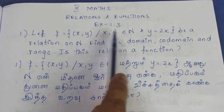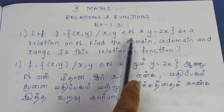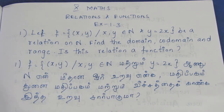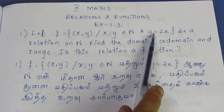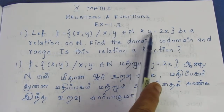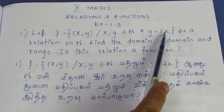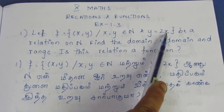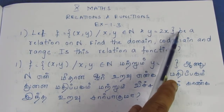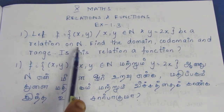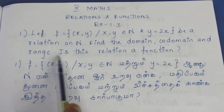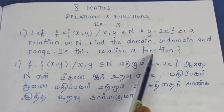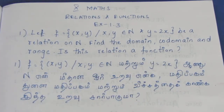x and y belong to natural numbers: 1, 2, 3, 4... Y is equal to 2x. Find the domain, codomain, and range. Is this relation a function? We will tell you — this is a relation, and this is a function.